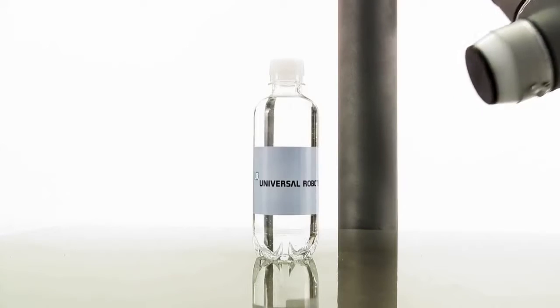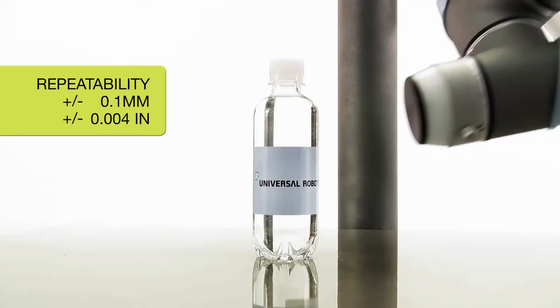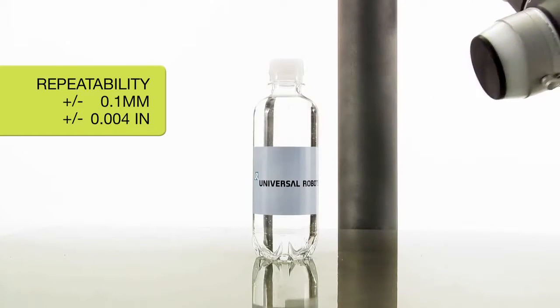The robots pay attention to detail. Utilizing their six-axis joints, Universal Robots can handle even the tiniest parts in production processes not practical for manual labor.